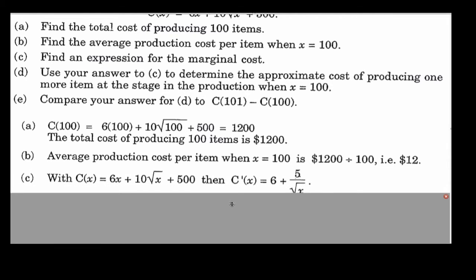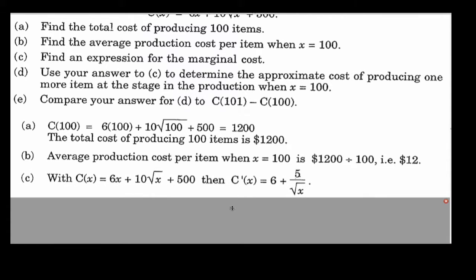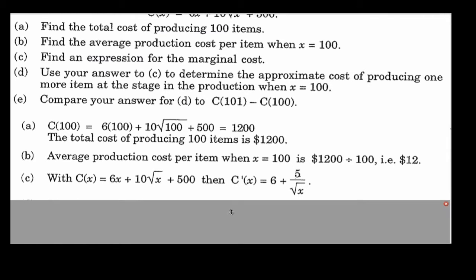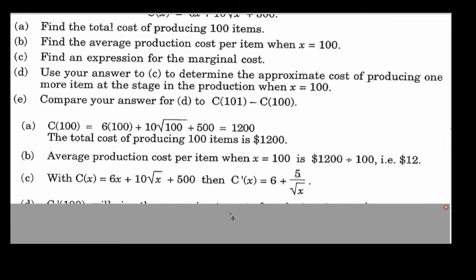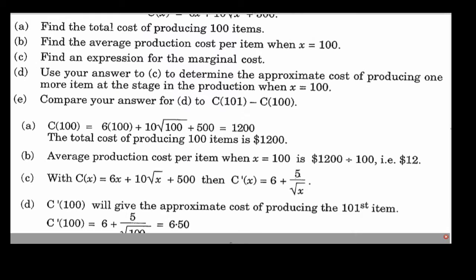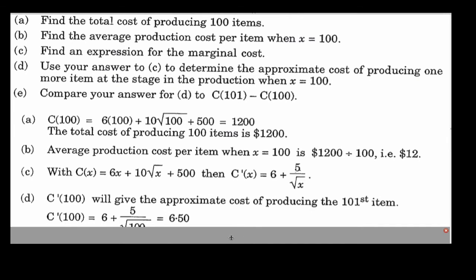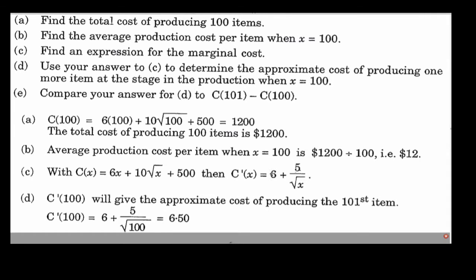Now find the expression for marginal cost — that's the derivative. Taking the derivative of C(x), the marginal cost is C'(x) = 6 + 5/√x. To find the approximate cost of producing one more item when x equals 100, we evaluate C'(100), substituting 100 into the marginal cost formula, giving us $6.50.